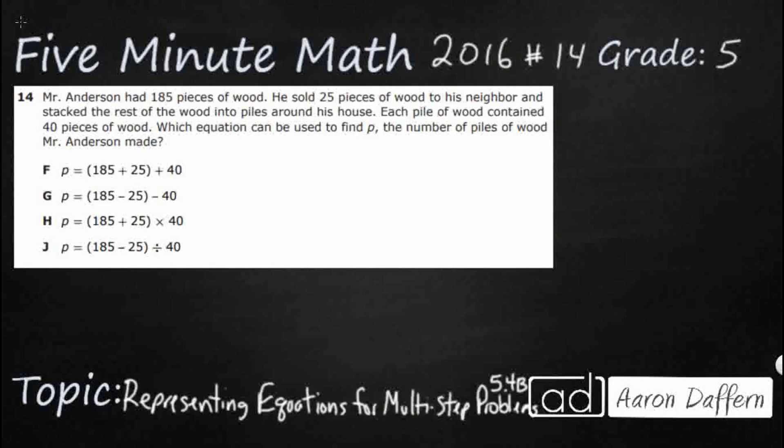So Mr. Anderson had 185 pieces of wood. He sold 25 pieces of wood to his neighbor and then stacked the rest in two wood piles around his house. Each pile of wood contained 40 pieces of wood.